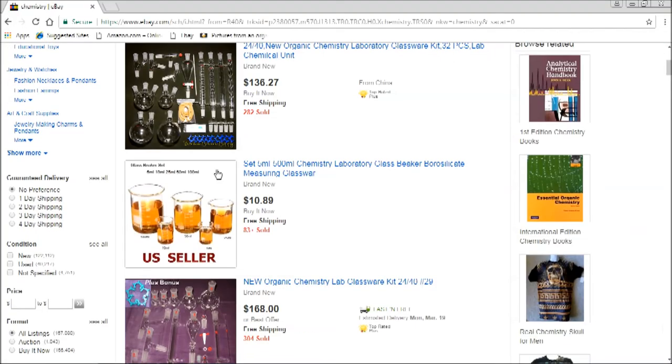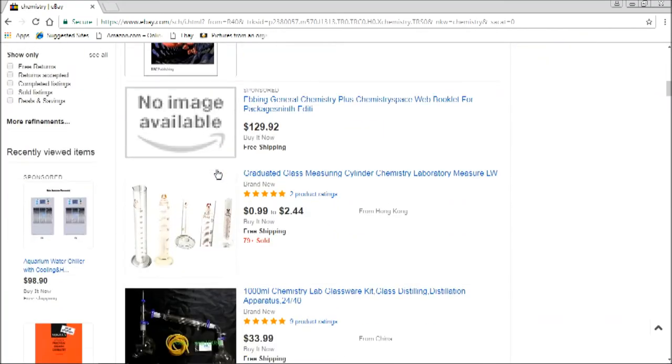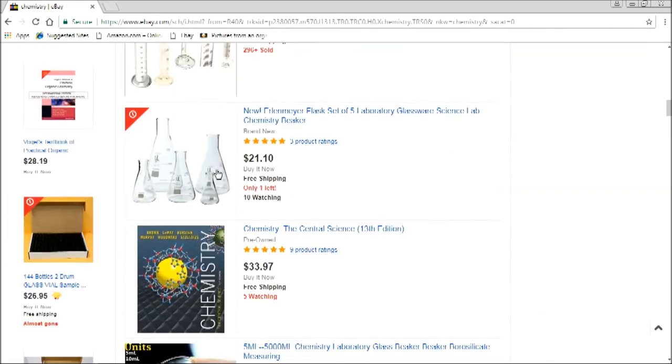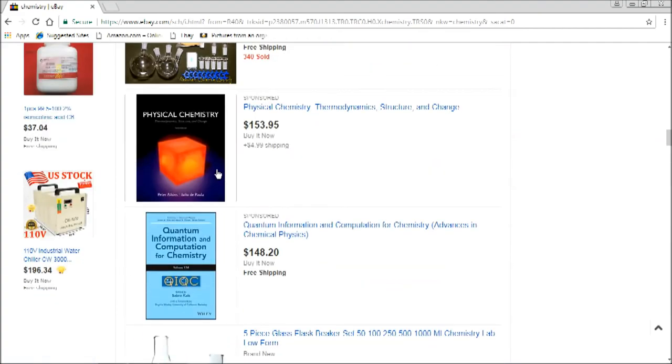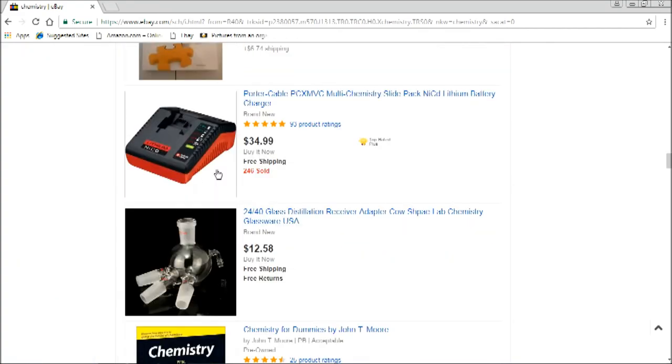Where do you get your chemicals or glassware? I get pretty much everything online. eBay is my favorite site and I order there mostly for chemicals and glassware. On eBay if you search hard and long enough, you'll pretty much find anything.